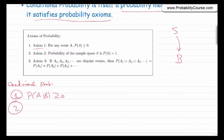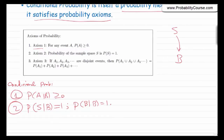Axiom 2: the probability of the sample space equals 1. Accordingly, P(S|B) = 1. Since our new sample space is B, we also have P(B|B) = 1 — the probability that B occurs given we already know B has occurred is obviously 1.